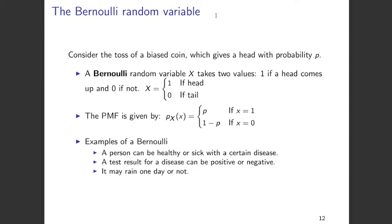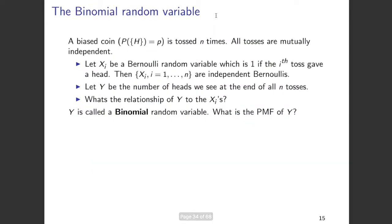Now let's see how Bernoulli random variables help us understand binomial random variables. Let us assume that you have a biased coin which is tossed n times. This biased coin gives a head with probability p, and you're tossing this coin n times. We assume that all these tosses are mutually independent — that is, one coin toss does not influence the outcome of another coin toss.